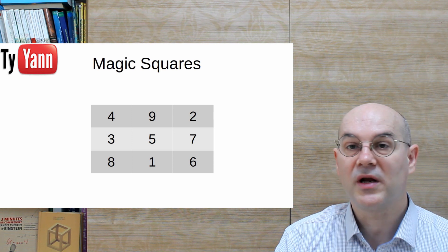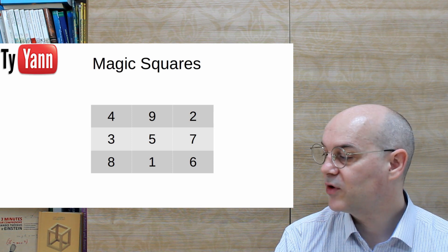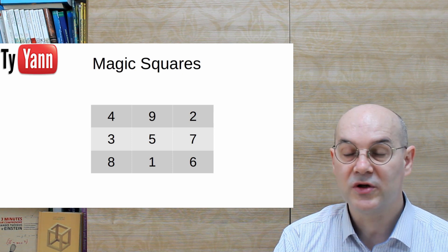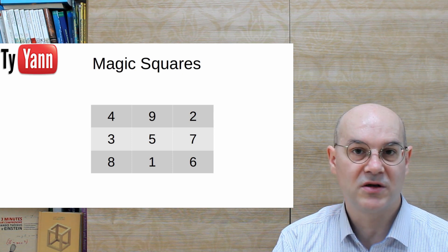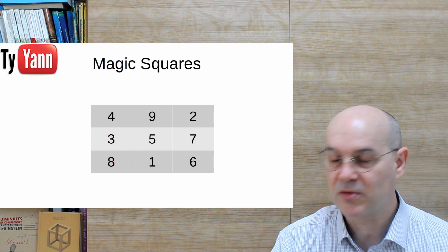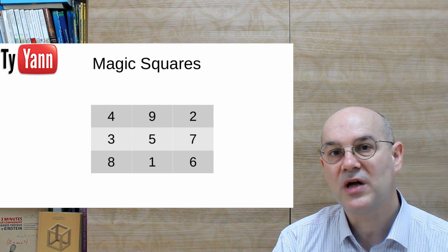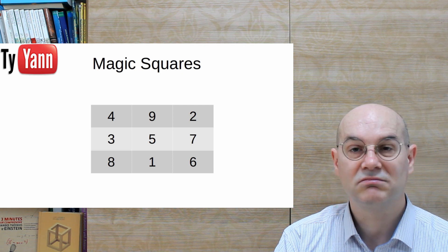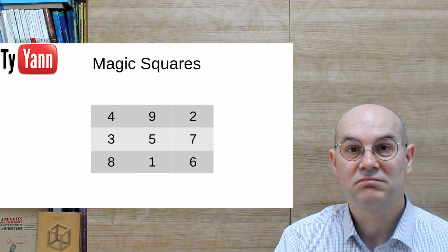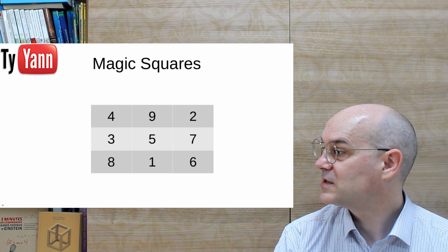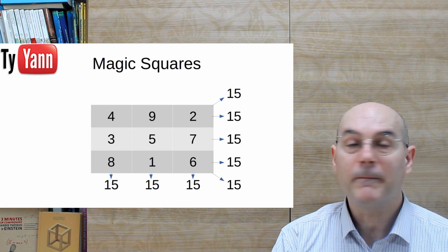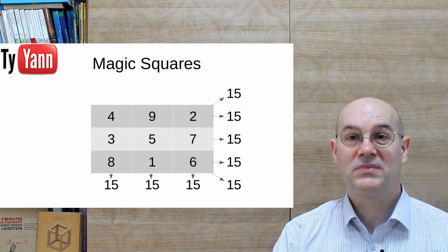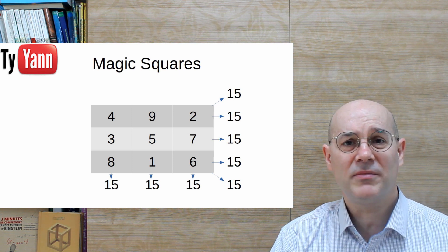And you might end up with something like that. So here I have a column and you should have a column or a row with 1, the smallest number, 9, the biggest number, and 5, which is the median number. And also, you should have a diagonal, which is 4, 5, and 6. And that's it. We have 15 everywhere.